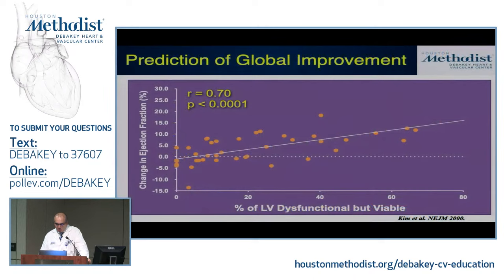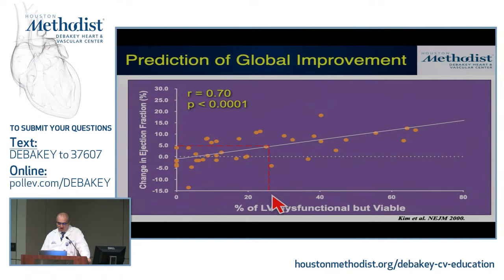On a global basis, there's a relationship between the extent of the LV that's dysfunctional but viable by delayed enhancement MRI and the change in ejection fraction approximately three months after revascularization. If we use a five percent improvement in ejection fraction as a clinically meaningful threshold, about 25% of the ventricle needs to be dysfunctional but viable to give approximately five percent improvement in contractile function.